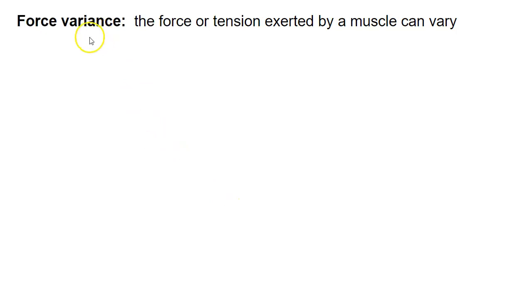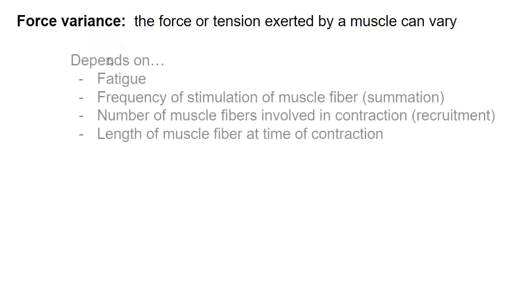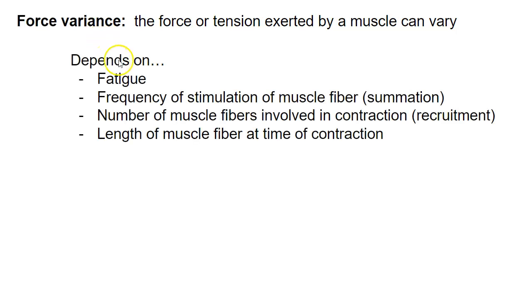Force variance — it kind of sounds confusing, but we'll just break it down by the words. It's force, meaning like the force or tension or strength of a contraction, and then variance simply means that there's variability. So force variance is the force or tension exerted by a muscle, and that force or tension can vary. The reason why it varies depends on these factors: fatigue, which we've already looked at; the frequency of stimulation of muscle fiber, which is called summation; and then the number of muscle fibers involved in the contraction, which is called recruitment.